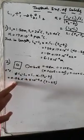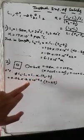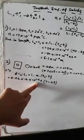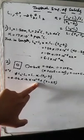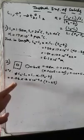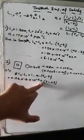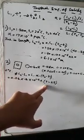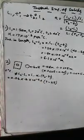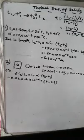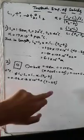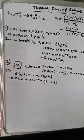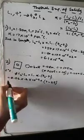Substituting the values: L1 = 0.06 m, α = 12 × 10⁻⁶ (the coefficient of linear expansion of iron). T2 is the unknown temperature T, and T1 = 25°C. So the equation becomes: L2 − L1 = 0.06 × 12 × 10⁻⁶ × (T − 25).